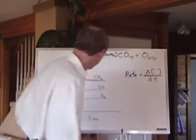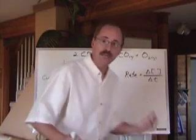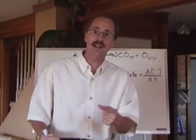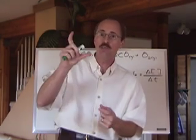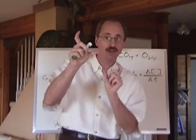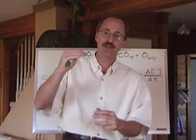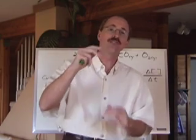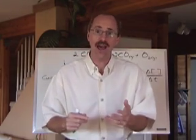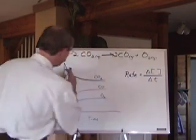If this were a straight line going straight down, it'd be easy to calculate the rate. For a straight line, you just take two points on the Y-axis and two points on the X-axis, take the difference between the two — rise over run gives you the slope of the line. That slope would be in units of moles per liter per second, representing how much CO₂ we'd be losing.